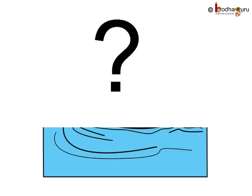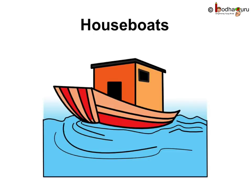Do you know? One more type of temporary or moving house is there. Instead of road, it moves in water. I am talking about a houseboat. As the name shows, a houseboat is a house built on a boat. In India, houseboats are generally found in Kashmir and Kerala. These have all the facilities which can be found in any house. Tourists in Kashmir and Kerala love to stay in these unique houses.